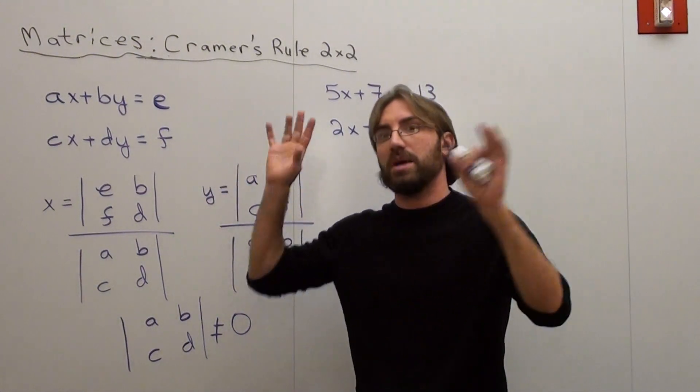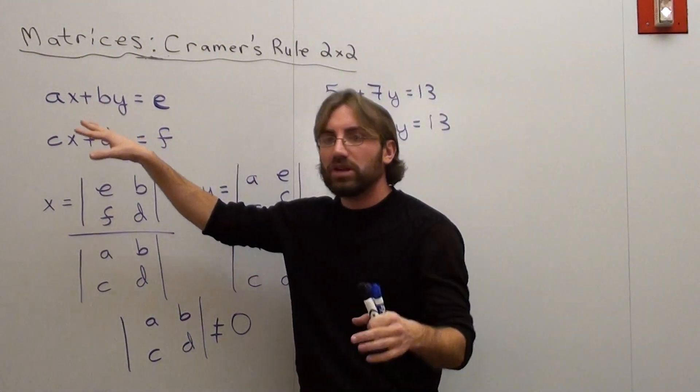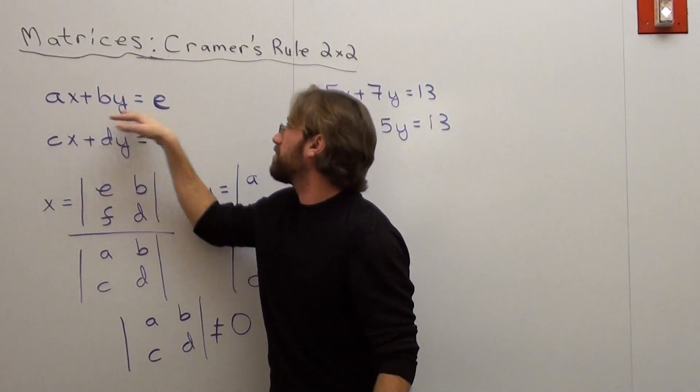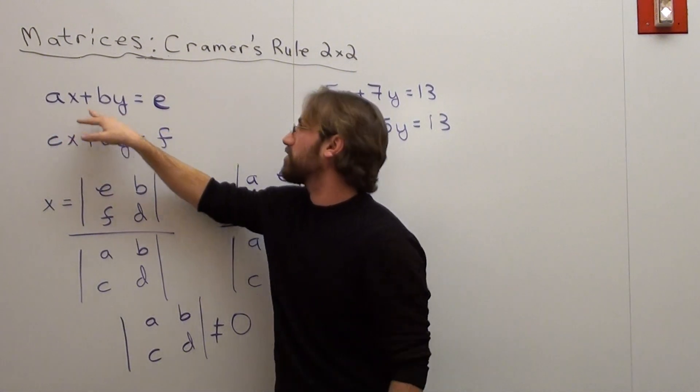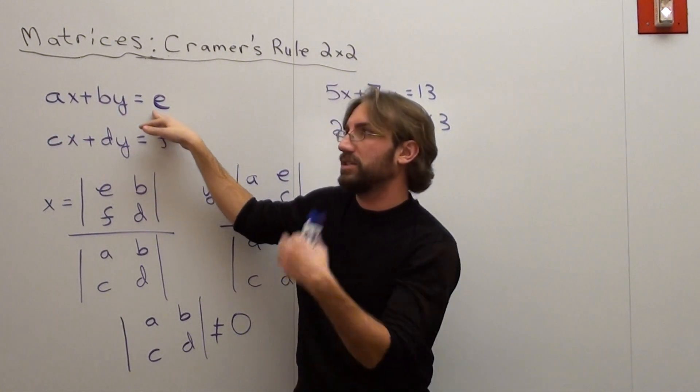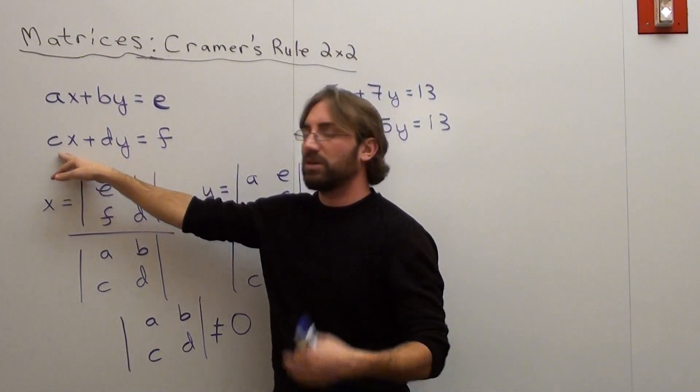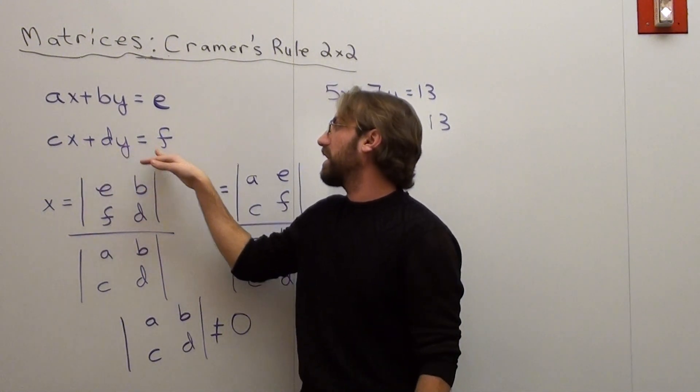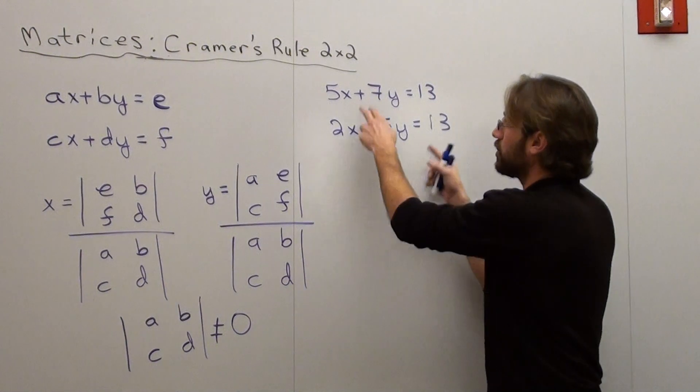So I've got these two equations, these hypotheticals. They're not real equations. It's just ax plus by equals e, where there's a number in front of x and a number in front of y and then it's equal to something, and then cx plus dy equals f, where there's a number in front of x, a number in front of y, and it's equal to something. It's just basically two equations.